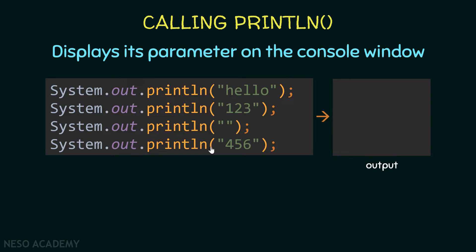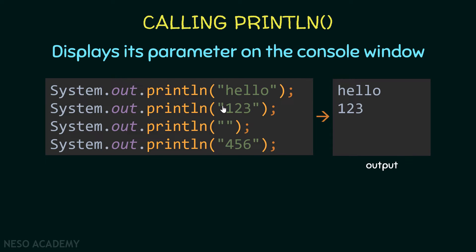If we print an empty string we will see nothing. We can also print '456' between double quotes. Now let's see the output: first we print 'hello' — it is printed without the double quotes. The double quotes just tell Java you are printing a string, but the value printed is what's between them. After 'hello' is printed, we execute the next statement and print '123'.